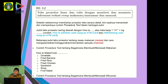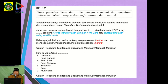Beberapa judul procedure text tentang resep makanan — recipe. Dan cara mengoperasikan atau menggunakan atau memainkan sesuatu, biasa kita sebut dengan manual. Contoh procedure text yang berkaitan dengan membuat atau memasak makanan, contohnya: 'how to make' or 'how to cook' — how to make omelette, how to cook rice, how to make fried banana, how to make fried rice, how to make fried chicken, how to make sandwich, how to make soup, how to make fruit salad, dan seterusnya.